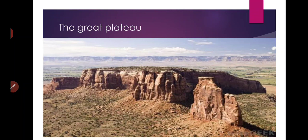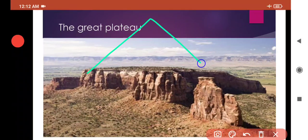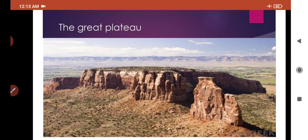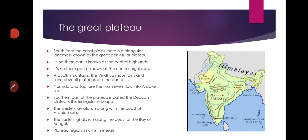Plateaus are the high land mass — they are higher than the common plain area and they look like a table land. You can see it doesn't have a peak. It is high land but it looks like a table. In our country we have great peninsular plateaus. Peninsular plateaus means an area that is surrounded by water bodies from three sides.